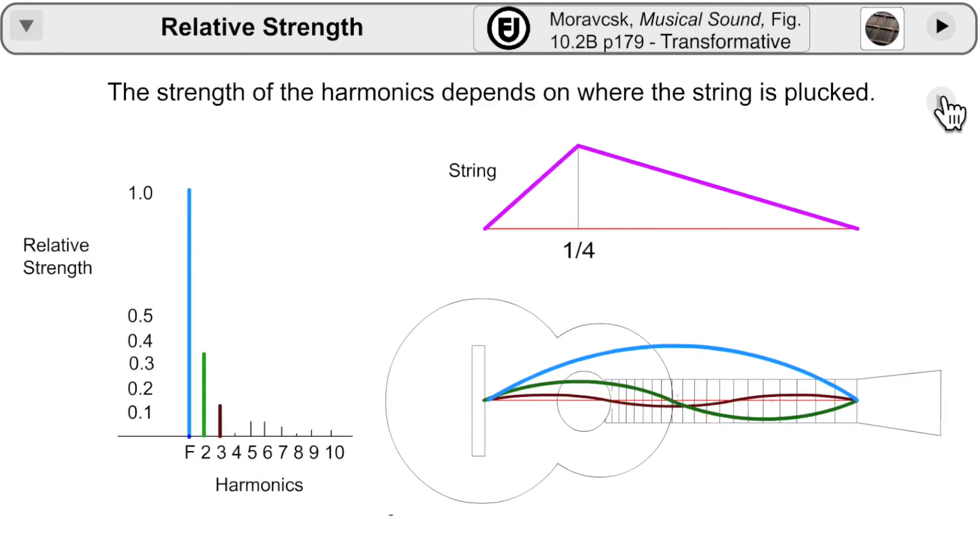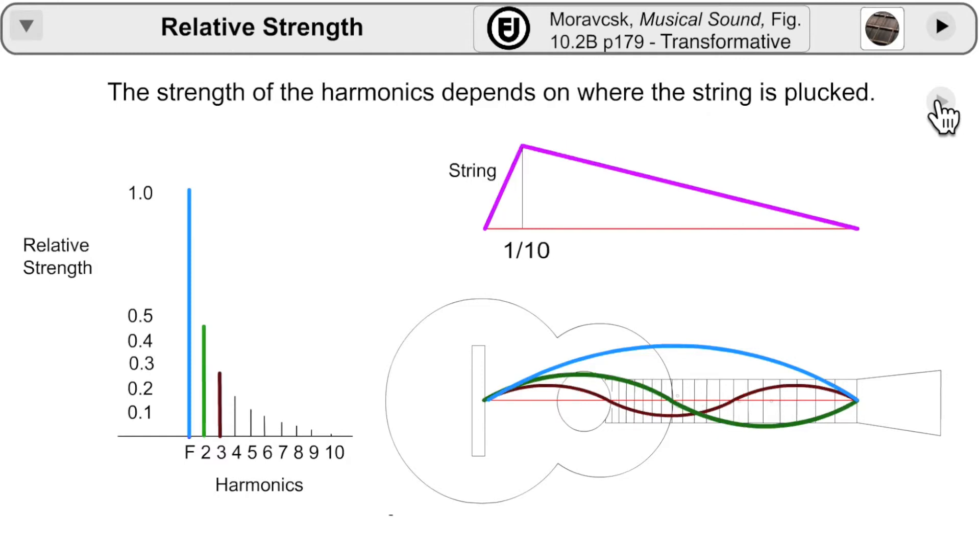Note that the upper harmonics increase in strength as the string is plucked closer to the bridge. And it produces a brighter, sharper sound.